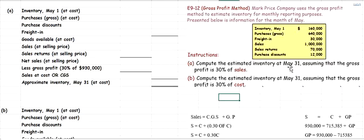We have two parts, A and B. In both parts we have to estimate ending inventory cost at May 31st. In Part A we assume gross profit is 30% of sales — we multiply sales by 30% to get gross profit. In Part B, gross profit is 30% of cost — we multiply 30% by cost to get the gross profit figure.